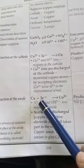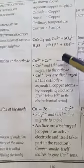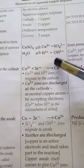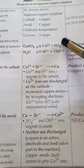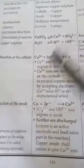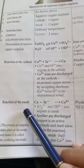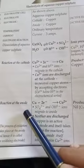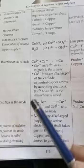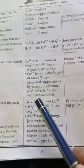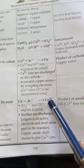At anode, these two ions will move. Negatively charged ions, sulphate ion and OH ion. But none of the ions will get discharged here because it is an active electrode that is made up of copper. It itself will lose electrons to form copper ions.